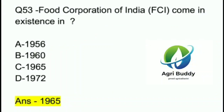Question 53. Food Corporation of India (FCI) came into existence in? A. 1956. B. 1960. C. 1965. D. 1972. And the answer is 1965.